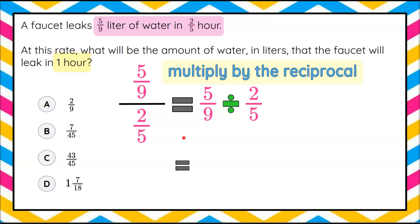So we're going to write another equivalent expression. We're going to take five-ninths and we're going to change division to multiplication and we're going to multiply by the reciprocal of two-fifths.